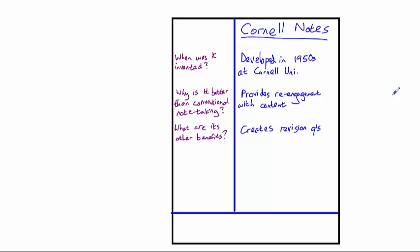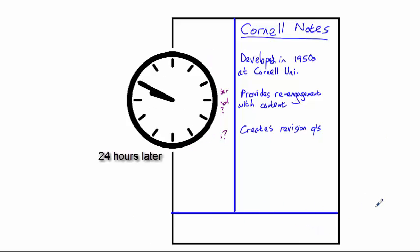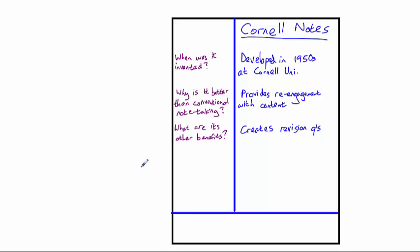What about this section left blank at the bottom of the page? This is for writing a summary. So, a further 24 hours after writing the questions, that's 48 hours after you wrote the original text, you should now write a very brief summary, just one or two sentences, to sum up what has been written in the notes above.